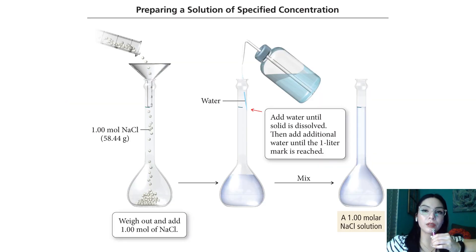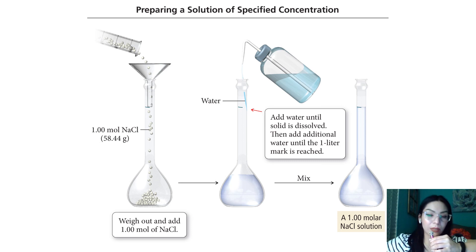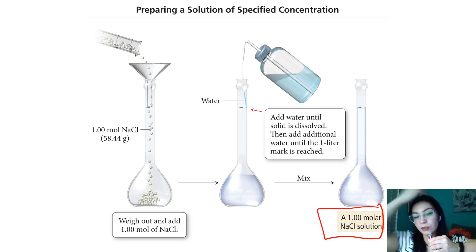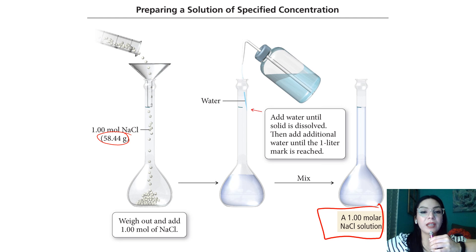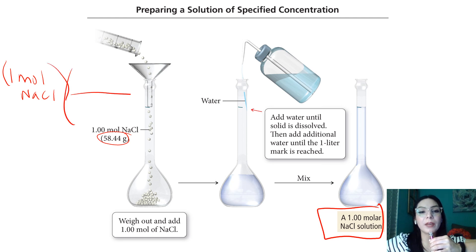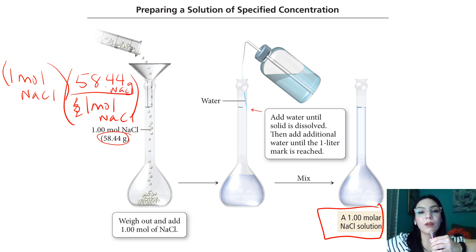We're going to do some examples on how to calculate amounts of reagents to dissolve and make a solution of a certain concentration. In an actual lab, if you're making a 1 molar NaCl solution, you first figure out how much mass is in one mole of NaCl. The molar mass of NaCl is 58.44 grams, so you weigh out 58.44 grams.